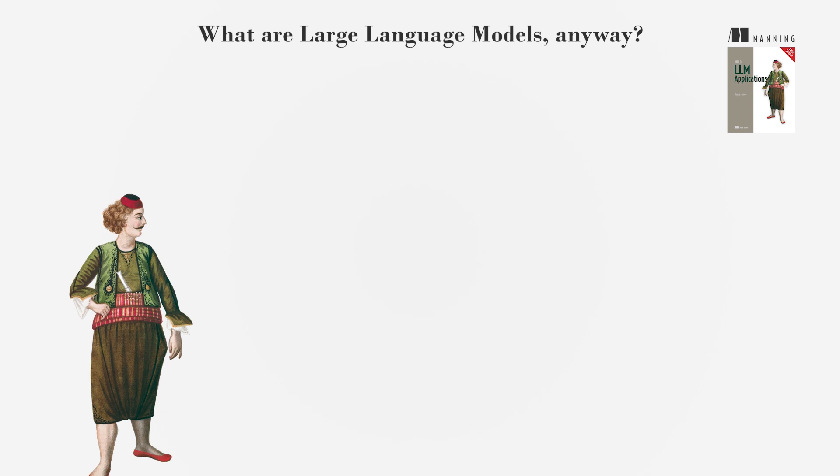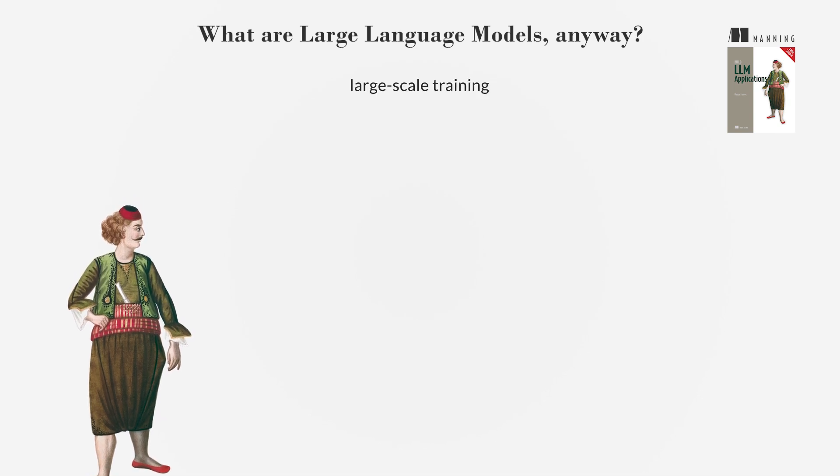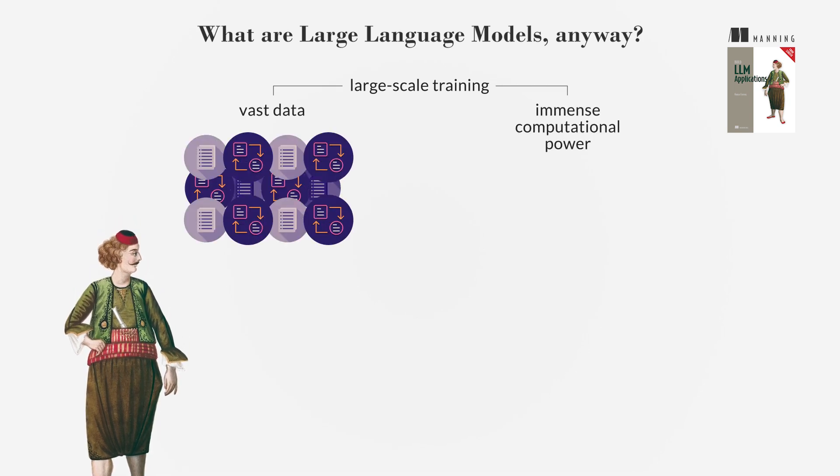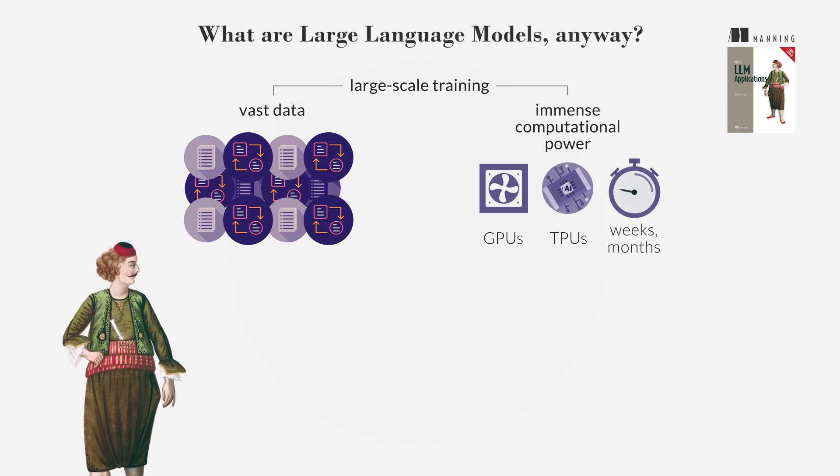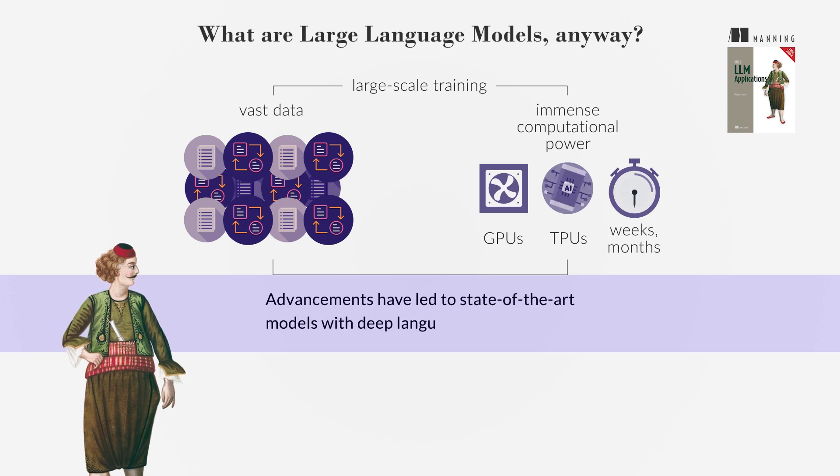Their power comes from large-scale training, requiring significant computational resources. Training LLMs involves vast data and immense computational power, often using GPUs or TPUs, and can take weeks or months. Despite high costs, advancements have led to state-of-the-art models with deep language understanding.